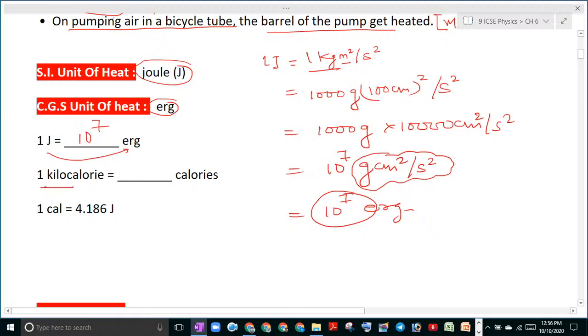In a similar way, 1 kilocalorie. Kilo means what? 1000, that is 10 to the power 3. I hope it is clear to you.